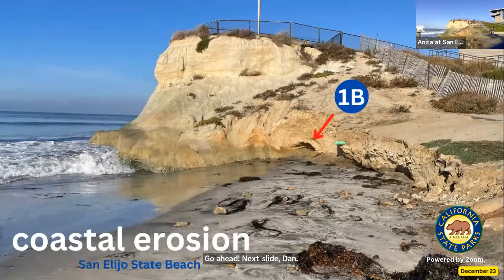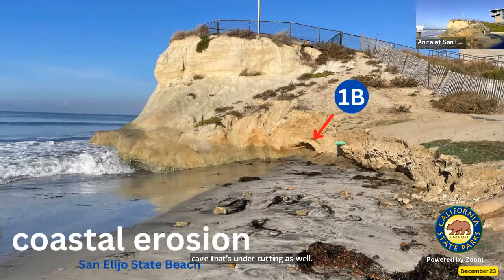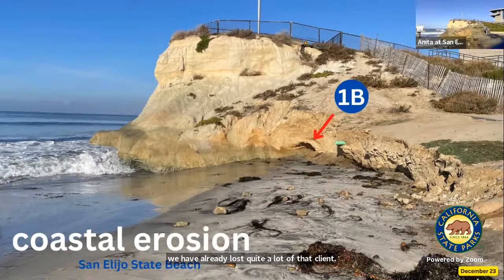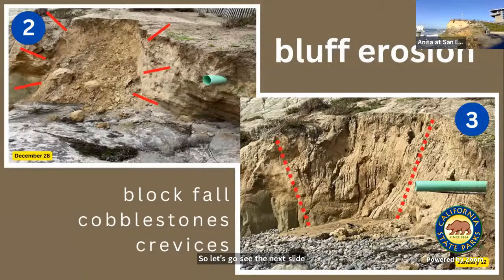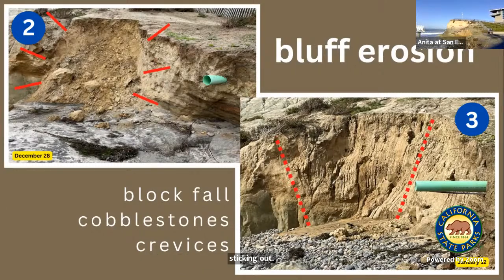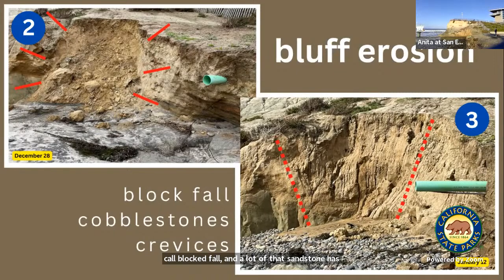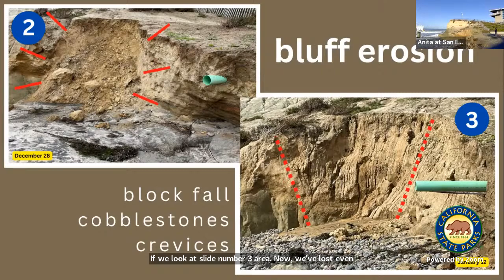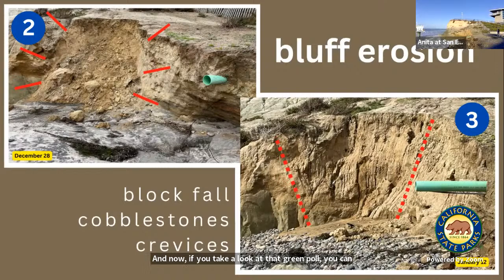Now you see 1B — that tiny little cave. That's undercutting as well. And after the last few high tides, we have already lost quite a lot of that cliff. You can see a tiny bit of that green pipe sticking out — we've had block fall and a lot of that sandstone has collapsed from the face. In the next slide showing area three, we've lost even more of that cliff face. We have weathering effects from the last rain where you see the ripples in the cliff, and now that green pole is quite a bit more extended from the cliff.